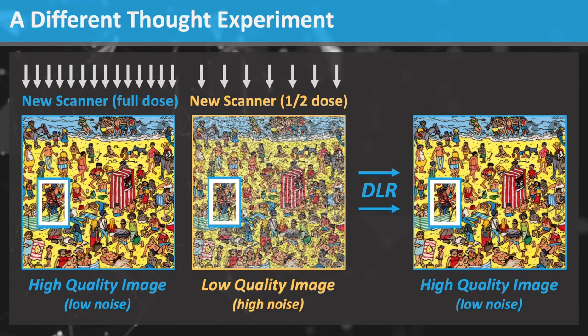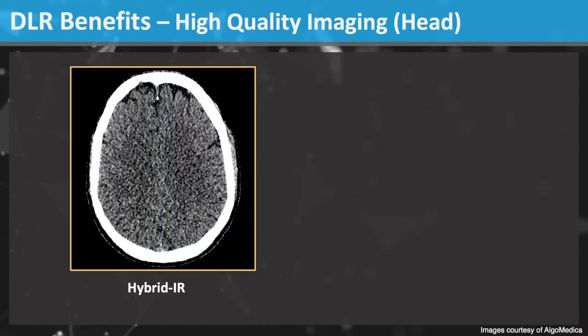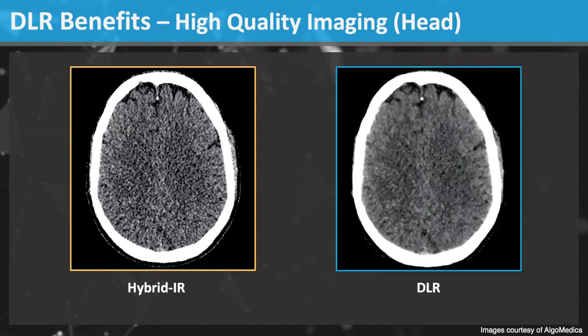Let's look at some real life CT images and examples. DLR can be used to improve CT image quality. This head CT has high image noise, despite using hybrid iterative reconstruction. DLR reduces the image noise and improves image quality.